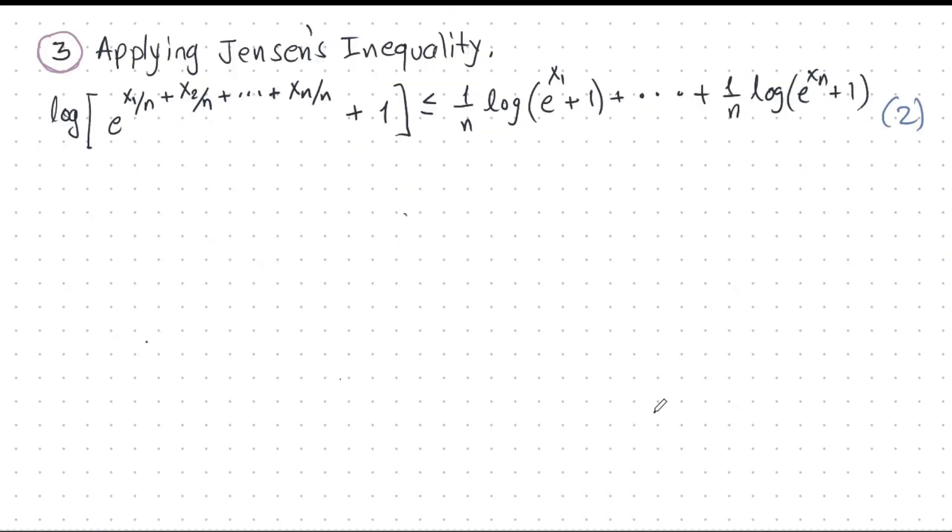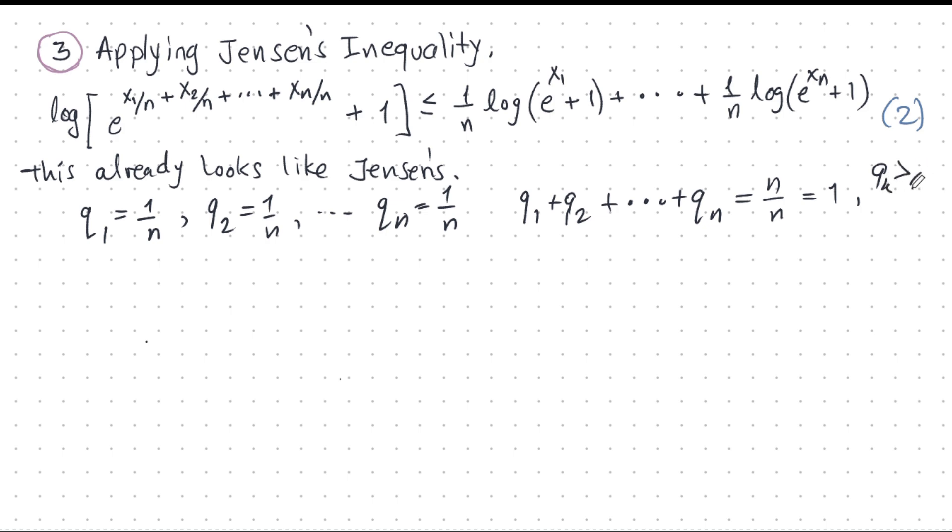This was my transformed inequality 2. Now, I distributed the 1 over n to all the terms on the right. This already looks a lot like Jensen's, but we have to make that more explicit and more clear. Let's take these Jensen q's to be like this. q₁ is 1/n, q₂ is 1/n, and so on. qₙ is 1/n. So they'll all be 1/n. So what is the sum of these things? Well, the sum of all of them is just n/n. And that is 1. So that is looking really good. And they're all positive. So I can put a little note here. 1/n, n is a positive number.